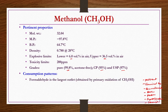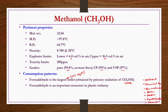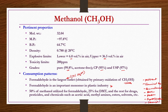Grades of methanol: pure grade (99.8% acetone-free methanol), CP grade (95% purity), and USP grade (97% purity) — the latter two being pharmacopoeial grades. Consumption pattern: formaldehyde is the largest outlet, obtained by oxidation or dehydrogenation of methanol. Approximately 50 percent or more of methanol is used for formaldehyde production, since formaldehyde is an important monomer in the plastics industry for making many types of resins.